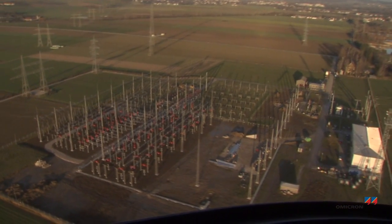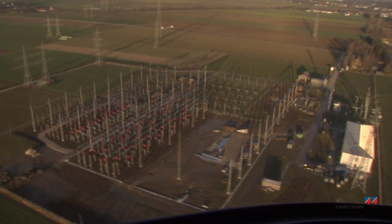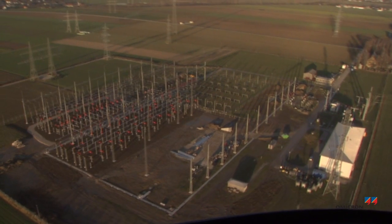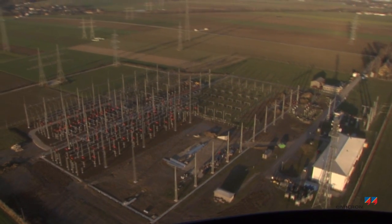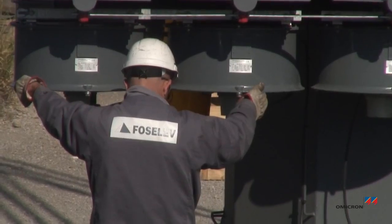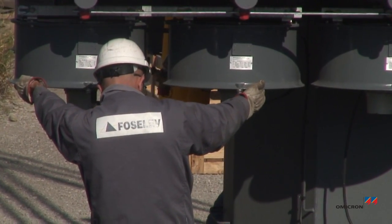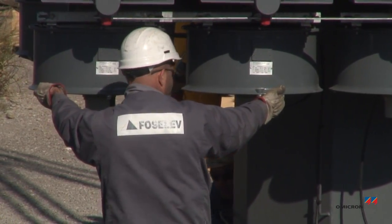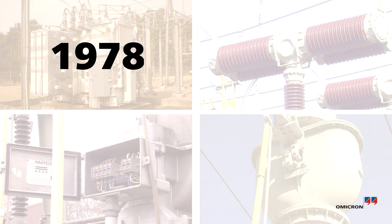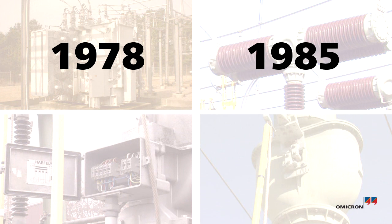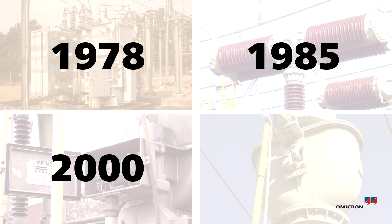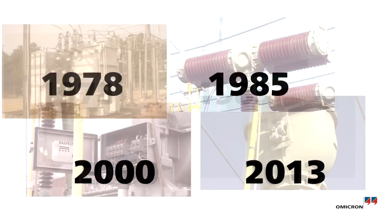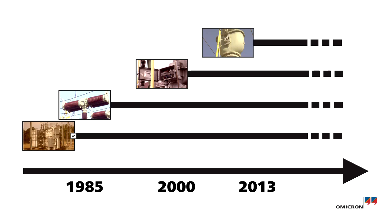In today's power systems, a large variety of substation equipment can be found. The characteristics of the equipment differ in function, design, technology, and age. Aside from these characteristics, equipment maintenance depends on the application in the system and the philosophy being employed.